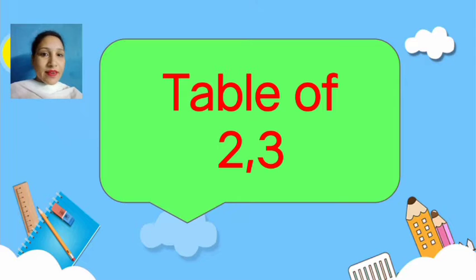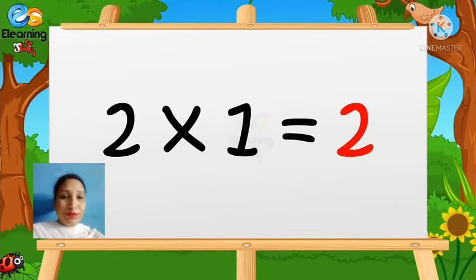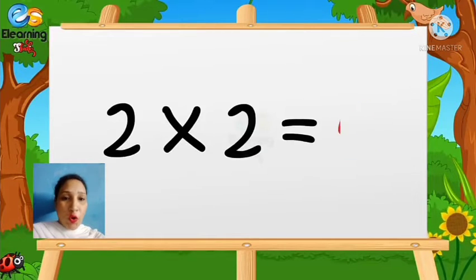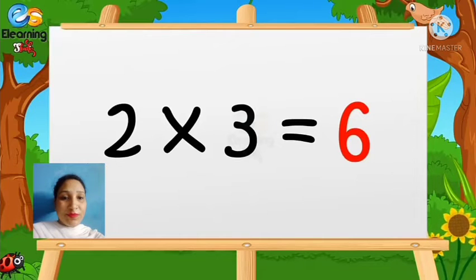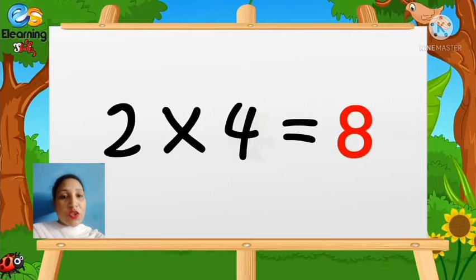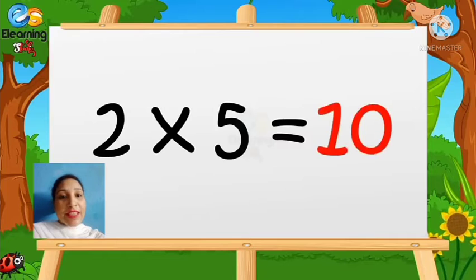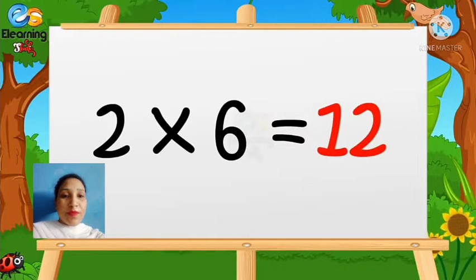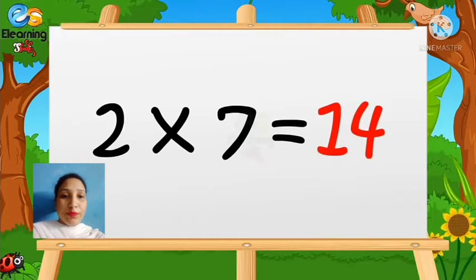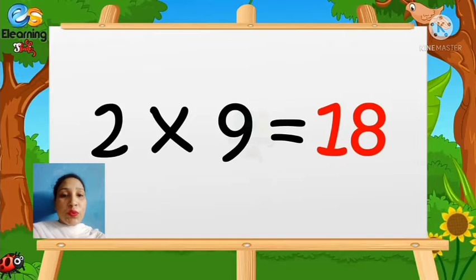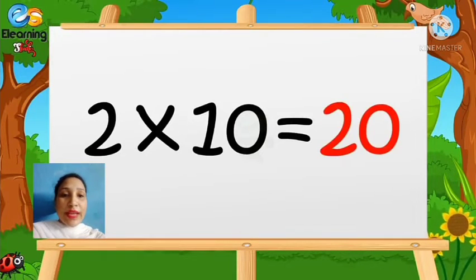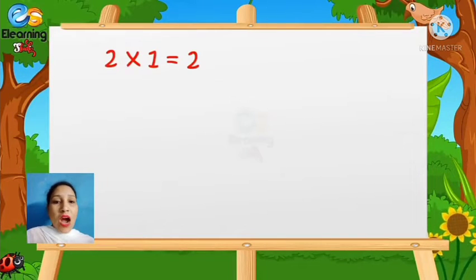Firstly, we will revise the table of two. Two ones are two, two twos are four, two threes are six, two fours are eight, two fives are ten, two sixes are twelve, two sevens are fourteen, two eights are sixteen, two nines are eighteen, and two tens are twenty. This was the table of two.